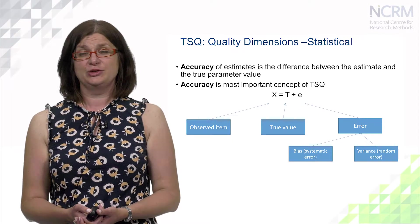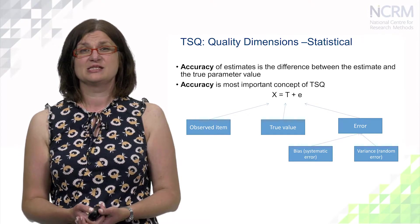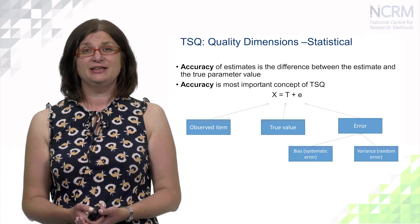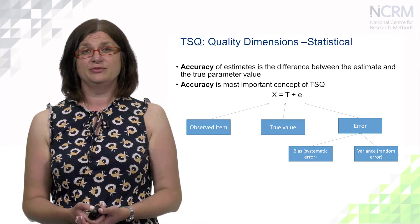Ideally we would like error to be as small as possible, because then our observed item will be very close to our true value. For example, respondents are asked how many times they went abroad during the last year, and a respondent gives an answer of 4. However, they forgot that they did a day trip to Amsterdam to see the flowers, so their true value is 5, not 4, and our error term is 1.